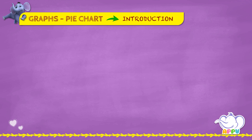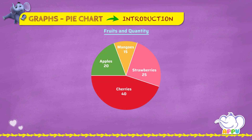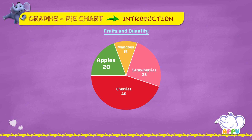Let's look at how to read pie charts. This pie chart shows different types of fruits and their quantity. We have four types of fruits: apples, mangoes, strawberries, and cherries, and their corresponding quantities mentioned near their names. We have 20 apples, 15 mangoes, 25 strawberries, and 40 cherries.